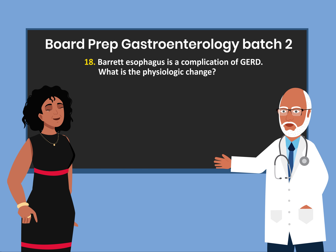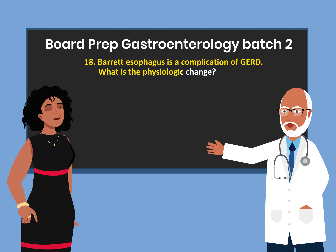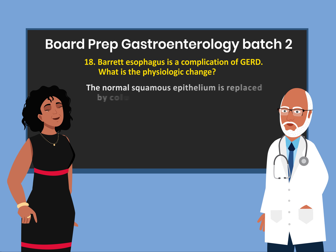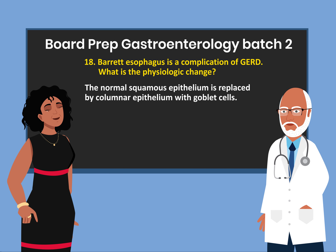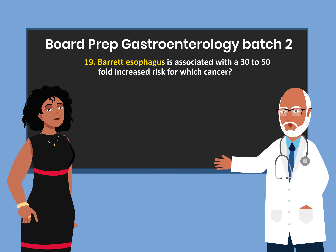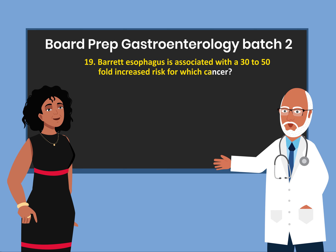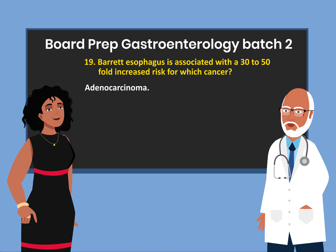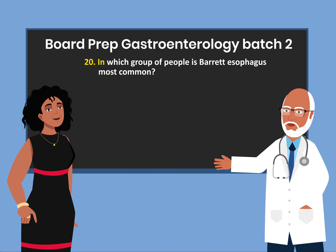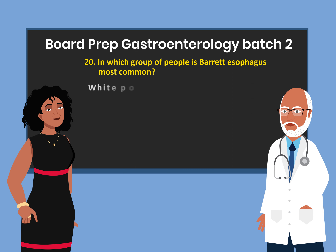Question 18: Barrett esophagus is a condition in which normal squamous epithelium is replaced by columnar epithelium with goblet cells. Question 19: Barrett esophagus is associated with a 30 to 50 fold increased risk for which cancer? Adenocarcinoma. Question 20: In which group of people is Barrett esophagus most common? White population.